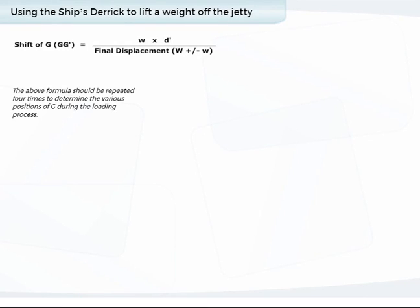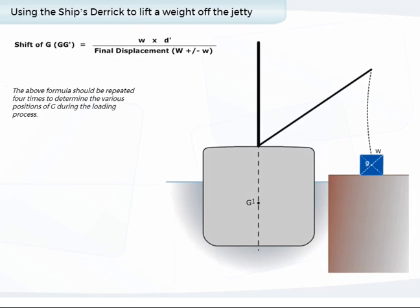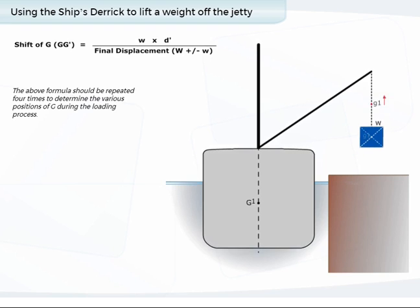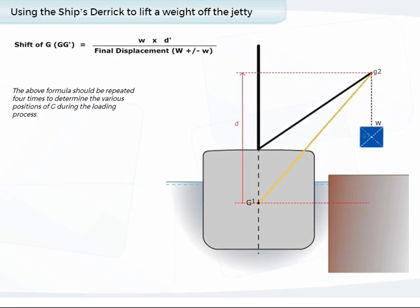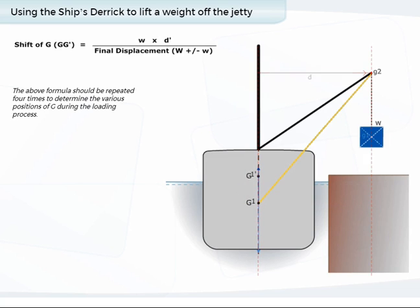We use four cases to determine the various positions of G during the loading process. First, the vertical movement of G when the weight is suspended by the derrick over the quay, where D is the vertical distance from G to the derrick head. Second, the horizontal movement of G, where D is the horizontal distance from G to the derrick head over the quay.